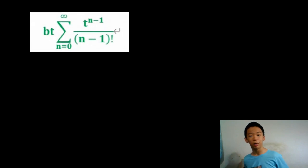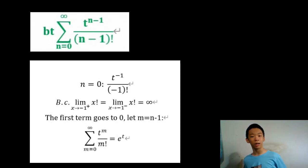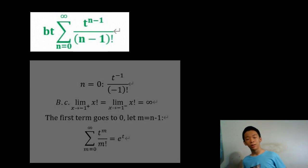Then, notice when n equals 0, we get t to the negative 1 over negative 1 factorial. When x approaches negative 1, the function x factorial goes to infinity, and so the first term goes to 0, so we can ignore it. So this series evaluates to b times t e to the t.